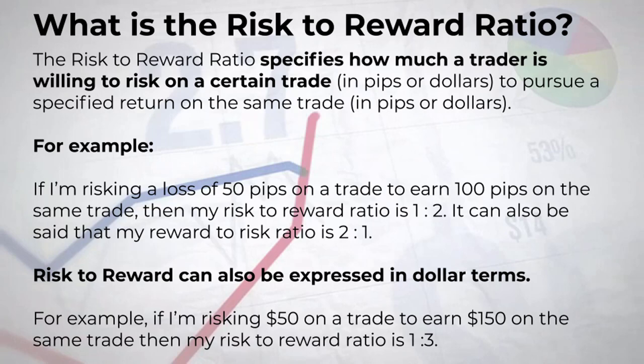This ratio can also be expressed in dollar terms. If I'm willing to risk $50 on a trade in an attempt to earn $150, then my risk-to-reward ratio is 1:3, because $150 is three times $50. My profit target is three times further from my entry price than my stop loss level. This math works for any instrument, whether it's a currency pair or a commodity.